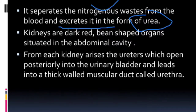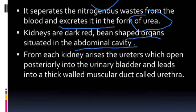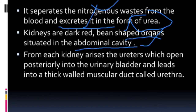Kidneys are dark red, bean-shaped organs situated in the abdominal cavity. What is the color of the kidney? It is dark red in color and it is bean-shaped. This kidney is present in the abdominal cavity.